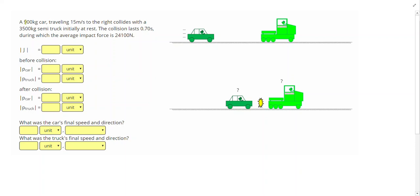In this problem, a 900 kilogram car traveling 15 meters per second to the right collides with a 3,500 kilogram semi-truck that's initially at rest. The collision lasts 0.70 seconds, during which the average impact force is 24,100 newtons.